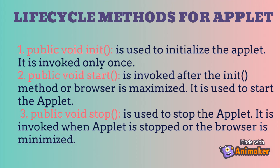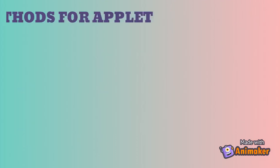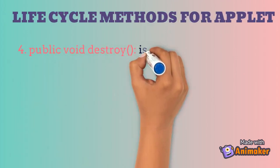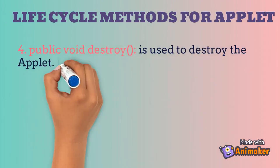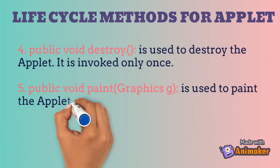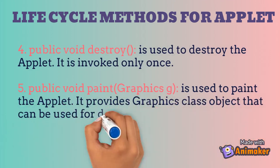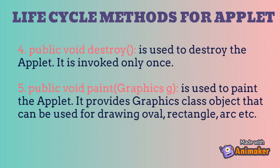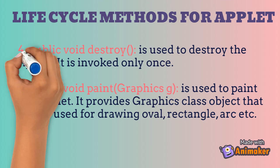When Applet is stopped, the browser is minimized. Fourth one is Destroy method. It is used to destroy an Applet, and it is called only once. The fifth one is Paint method. It is used to paint an Applet. It provides a Graphics object that can be used for drawing anything on the Applet window.